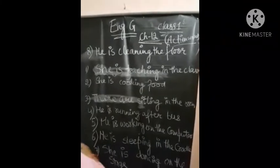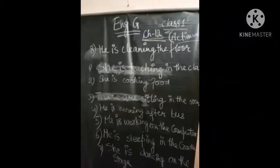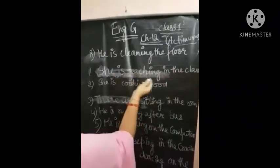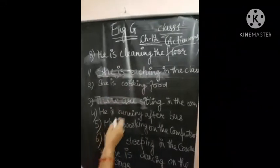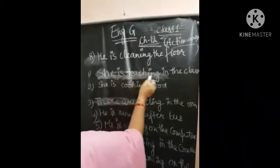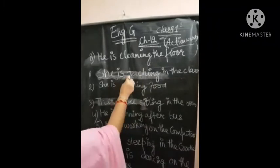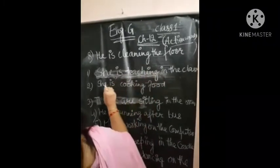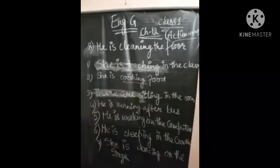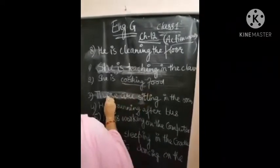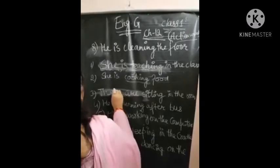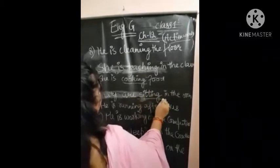Here are some examples. She is dancing in the class — what is she doing? She is dancing. She is teaching in the class — what is she doing? She is teaching. Teaching is an action. She is cooking food — what action is she doing? She is cooking. They are sitting in the room — what are they doing? They are sitting.